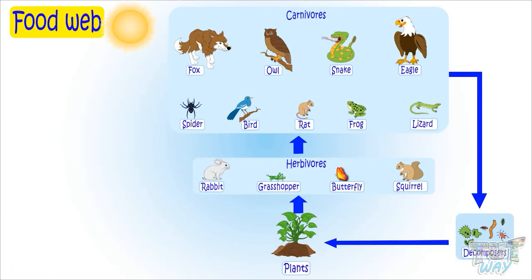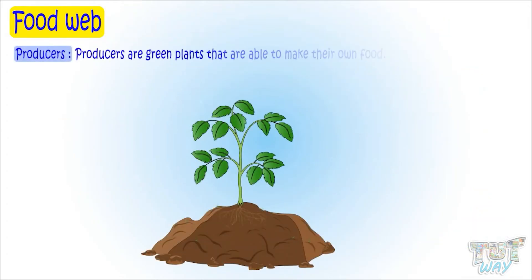All organisms in a food web are classified as producers, consumers, and decomposers. Producers are green plants that are able to make their own food using energy from the sun, nutrients and water from the soil by the process of photosynthesis.